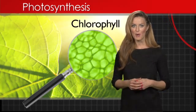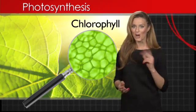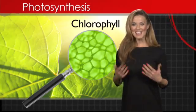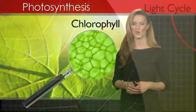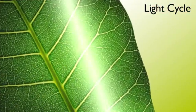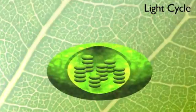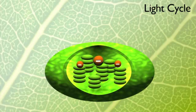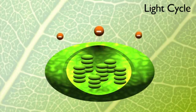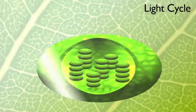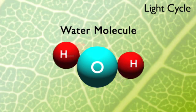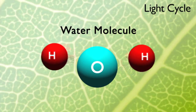The process of photosynthesis has two parts: the light cycle and the Calvin cycle. When light strikes a chlorophyll molecule, it excites some of its electrons and causes them to leave the molecule. Light also splits a water molecule into hydrogen and oxygen.